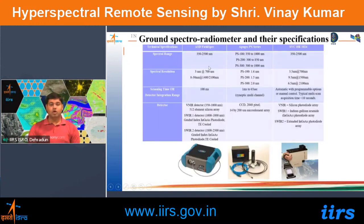Ground-based spectroradiometers are used for collecting spectral reflectance curves. Three instruments from different companies are: the FieldSpec spectroradiometer from ASD, one from APOGEE, and the HR1024 spectroradiometer from SVC.